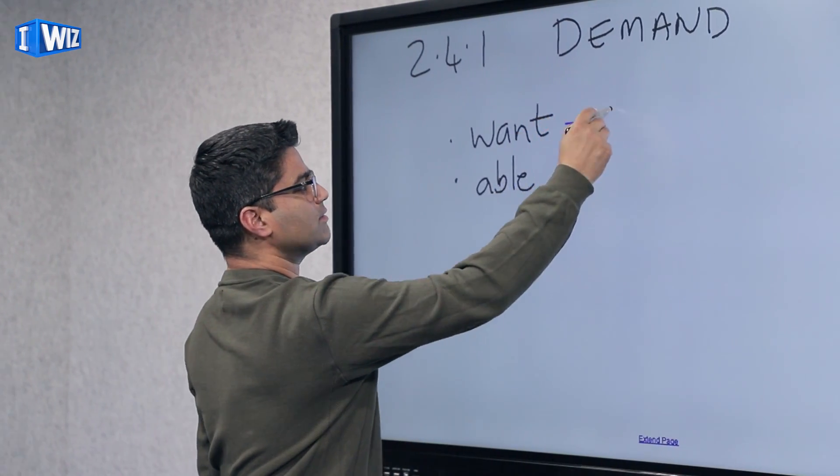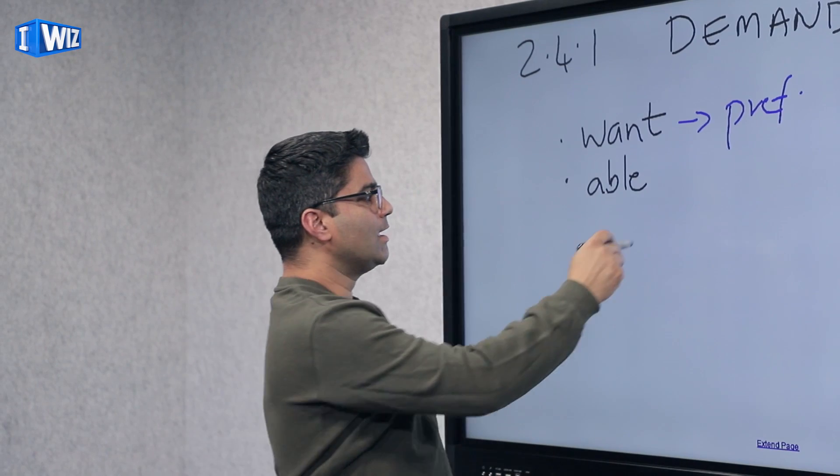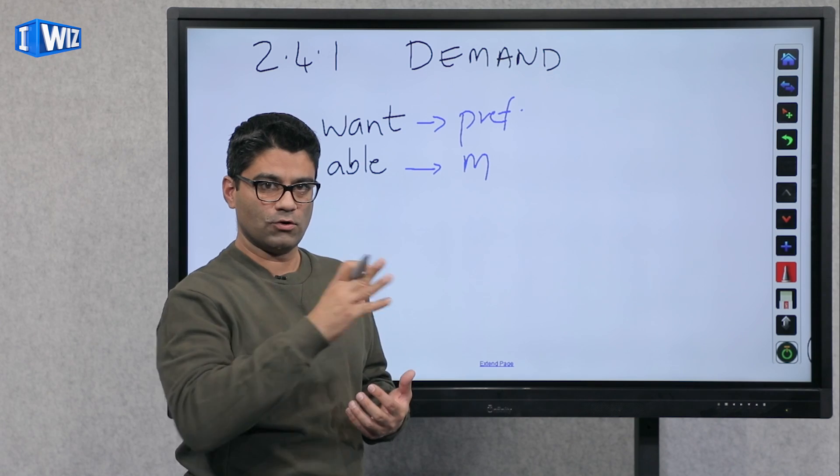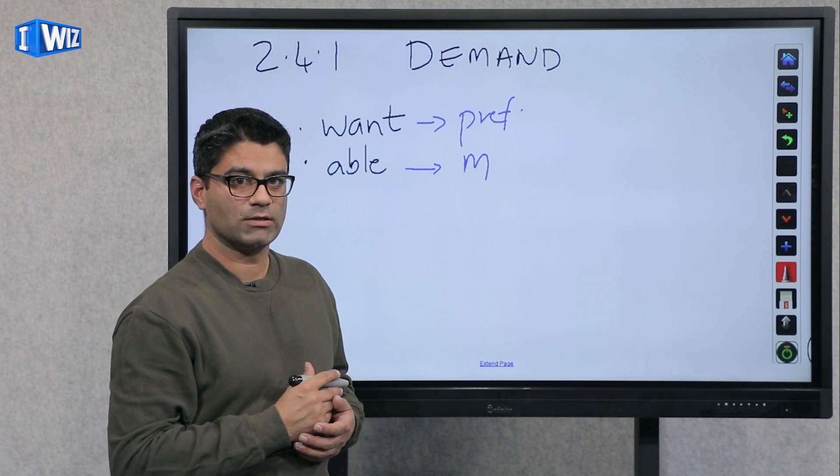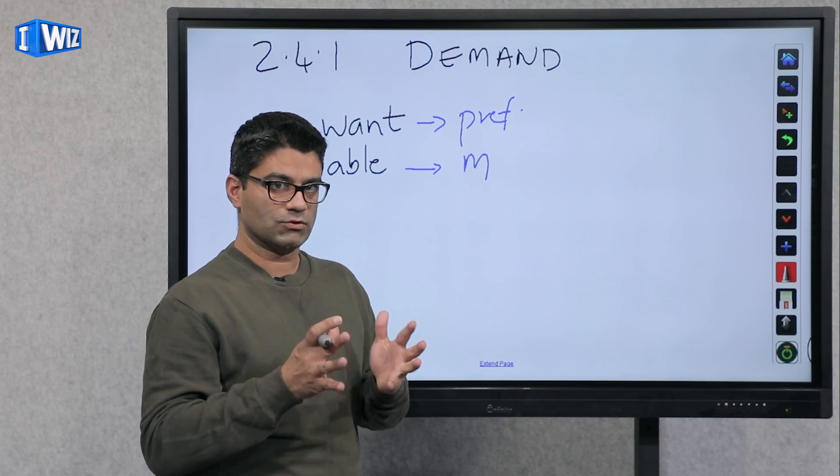So want is based on our tastes and preferences, which we've talked about in the past few videos, and able to buy is based on our income. So we should be able to afford them. Go look at the last few videos if you're not comfortable with indifference curves, consumer behavior, budget line, and all of those concepts.